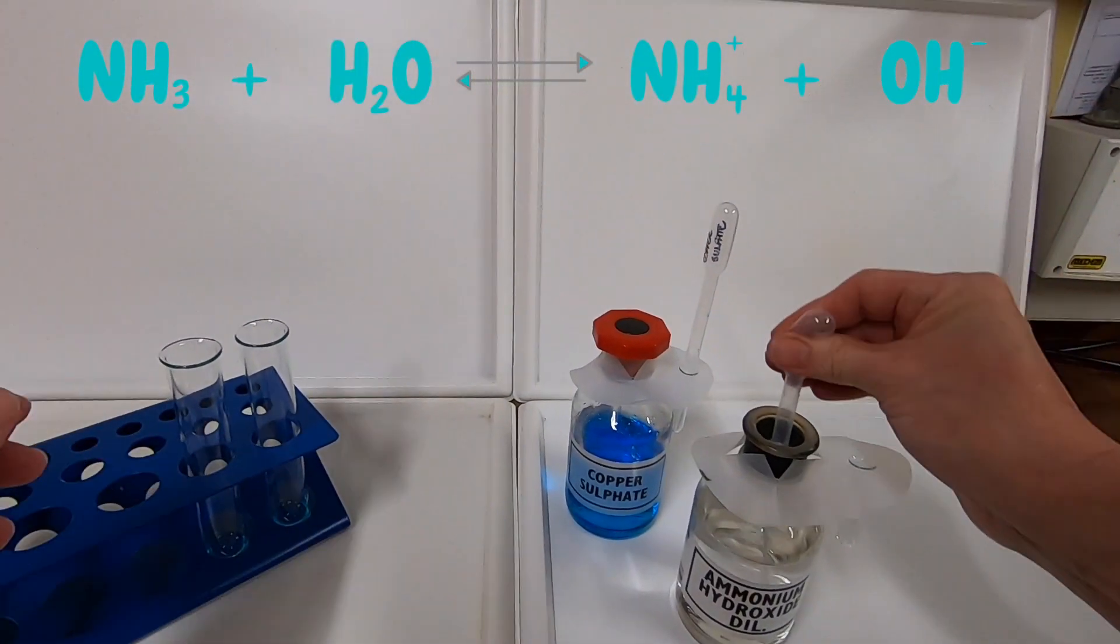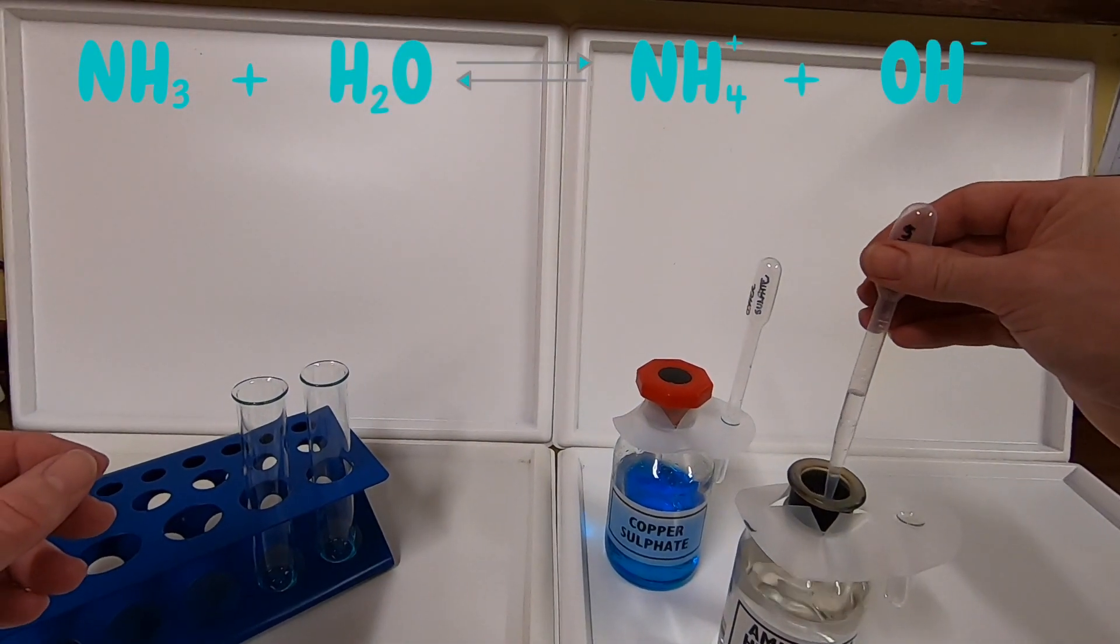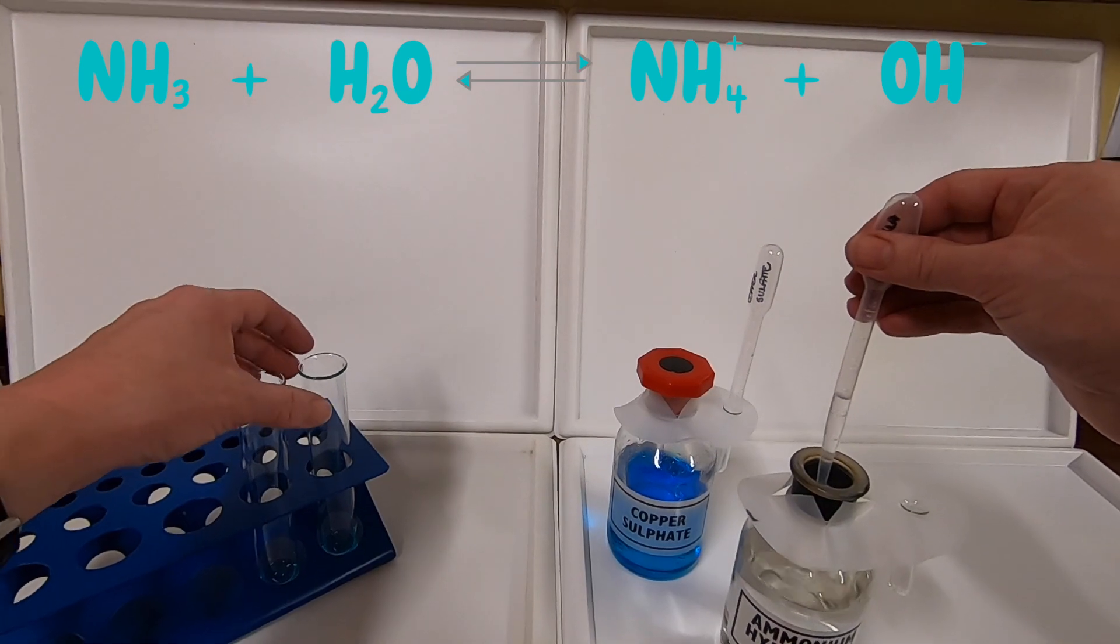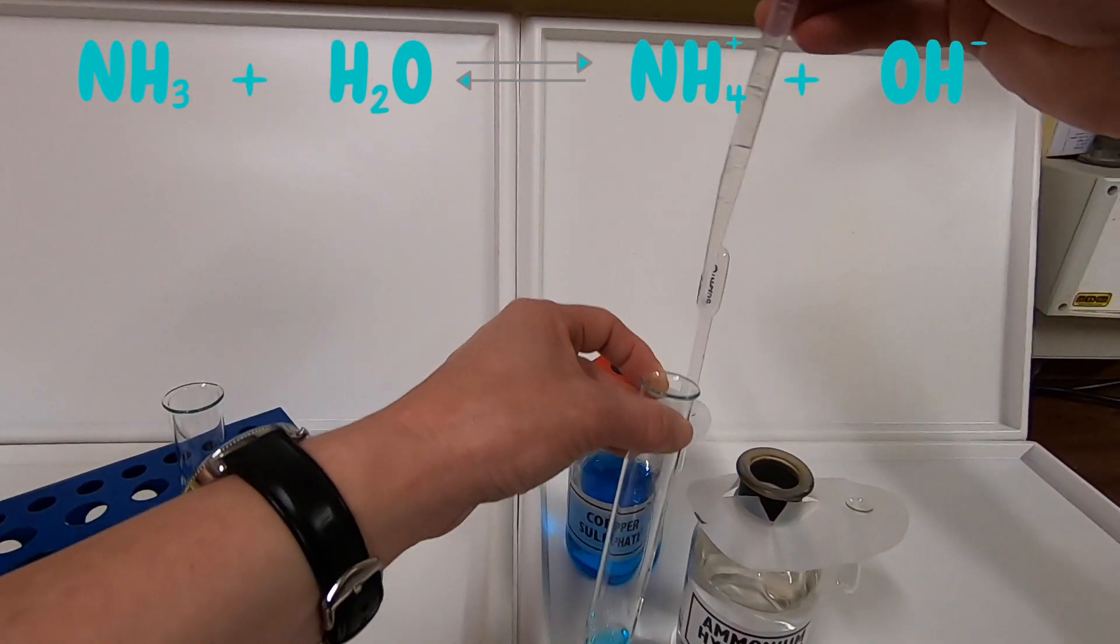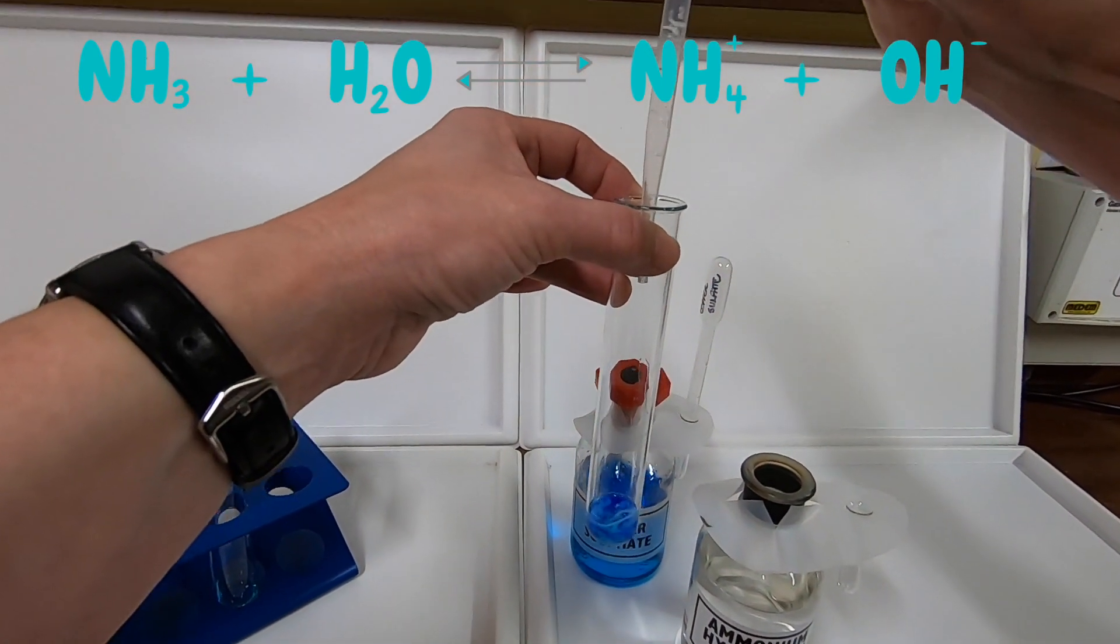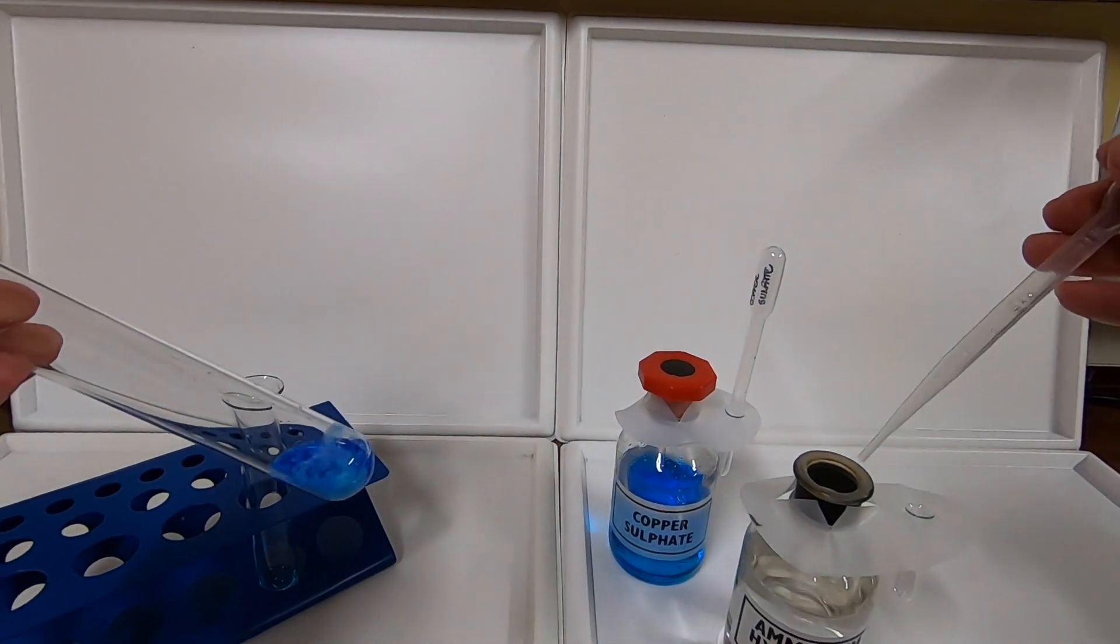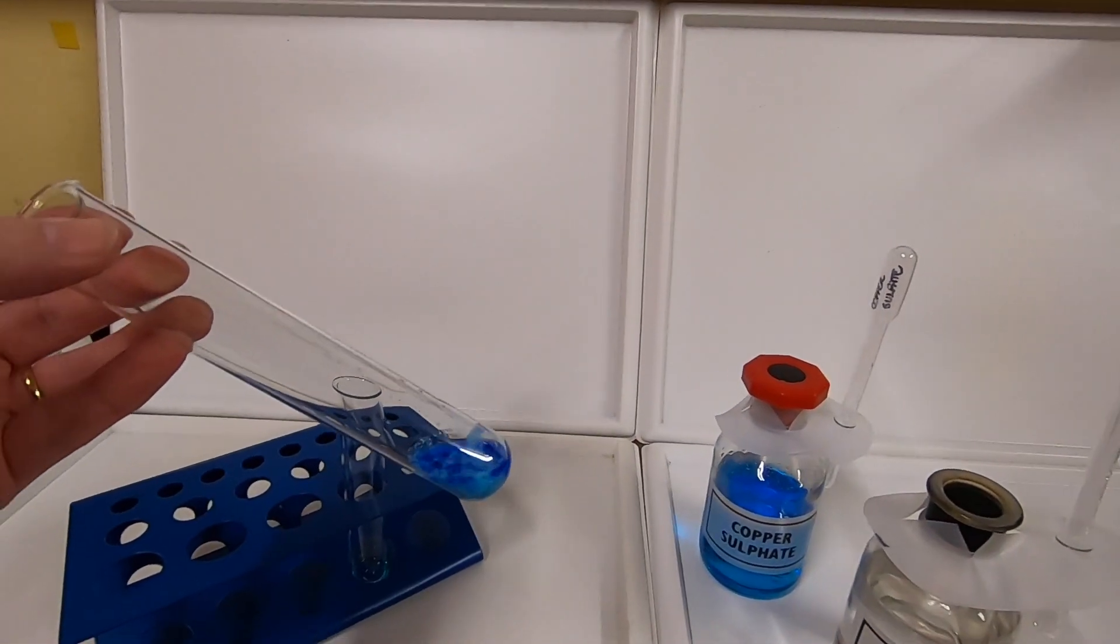When ammonia dissolves in water, it forms an equilibrium mixture. In this mixture, there are hydroxide ions. It's these hydroxide ions that are going to replace the aqua ligands in hexa aqua copper two ions.